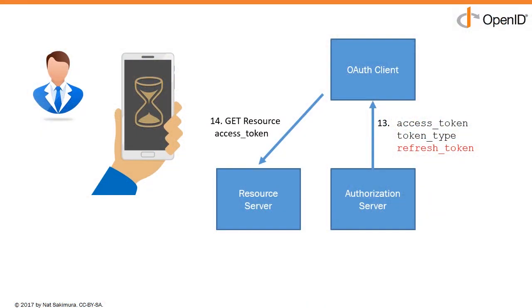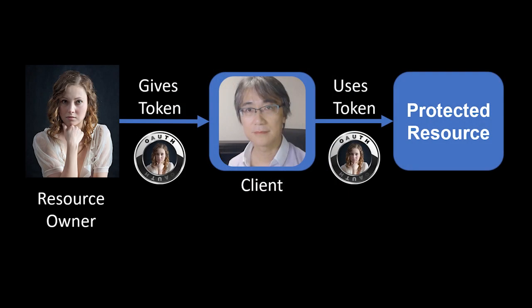The legitimate client uses it to access the data, which is all good. The problem begins when an application starts to use it as if it is representing the resource owner's or data subject's identity. Remember, an OAuth access token is usually given to somebody who is not the resource owner, to be used against the resource owner's protected resource. Actually, that's the whole point of OAuth — it is an access delegation protocol.